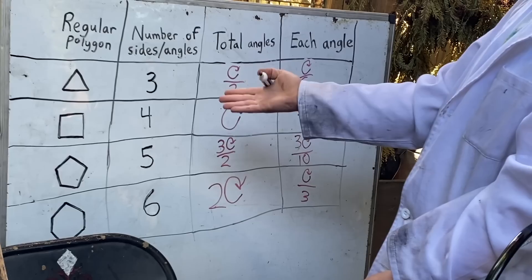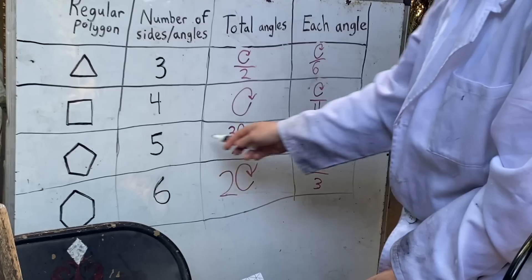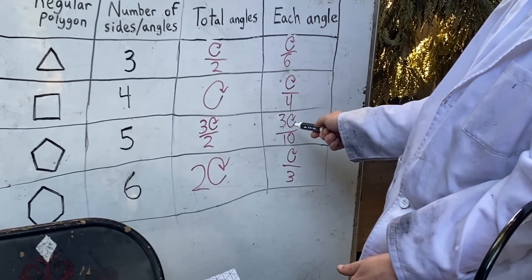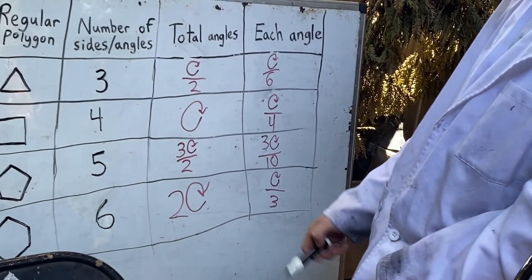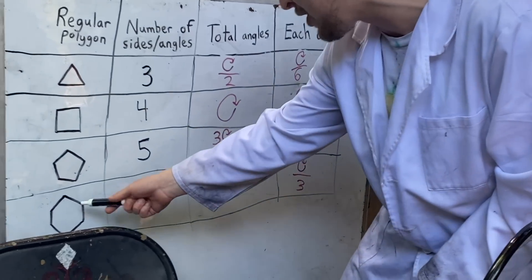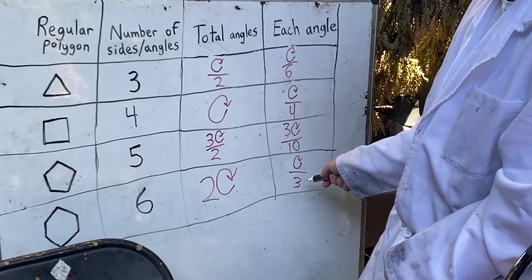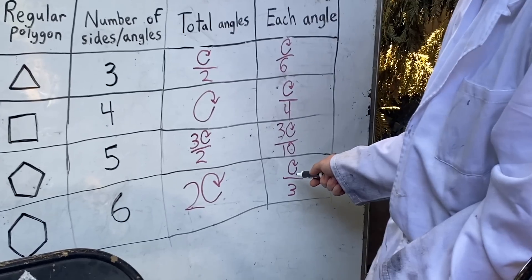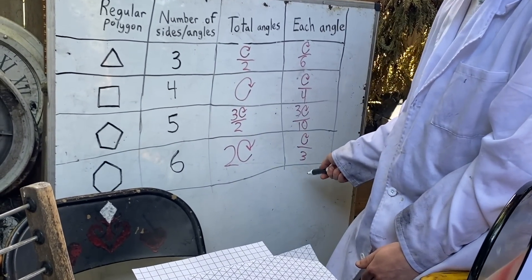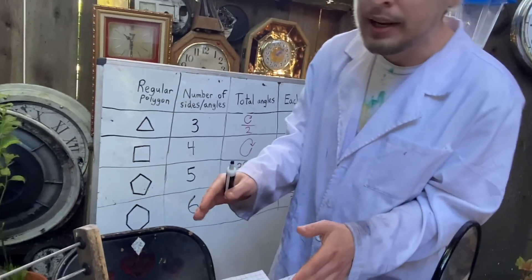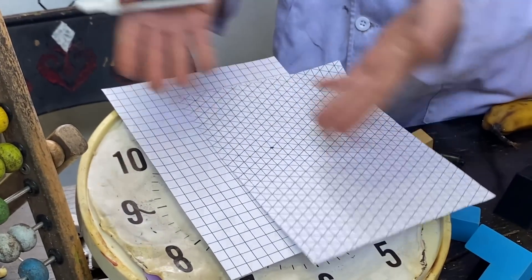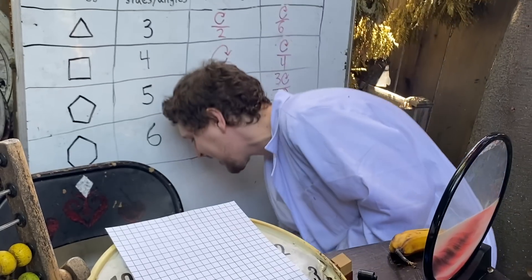This also gives us the clue in advance that these pentagons won't work. There is no whole number we can multiply by three-tenths of a rotation to have given us exactly one rotation. And it gives us the clue that hexagons will work in some way that involves three of them. And beyond hexagons, each angle would be more than a third of a full rotation, meaning we couldn't even fit three of them touching at a corner. And we need at least three touching each corner to make these tilings work.